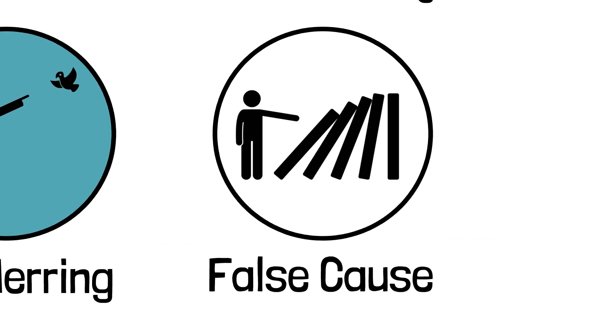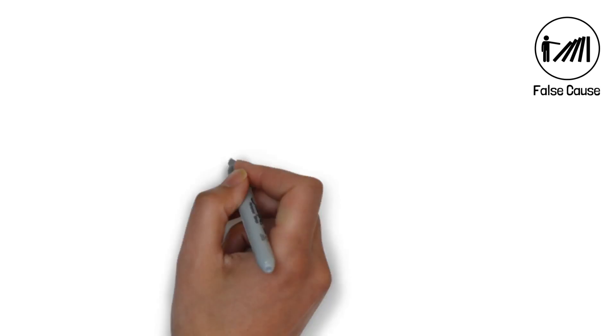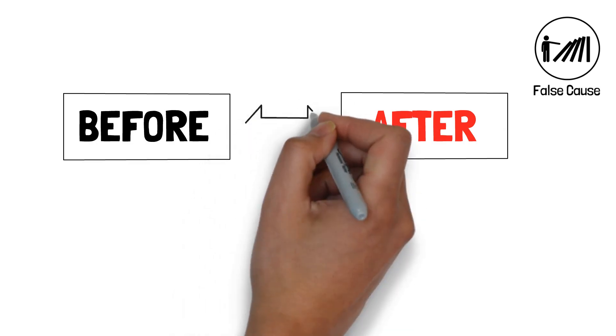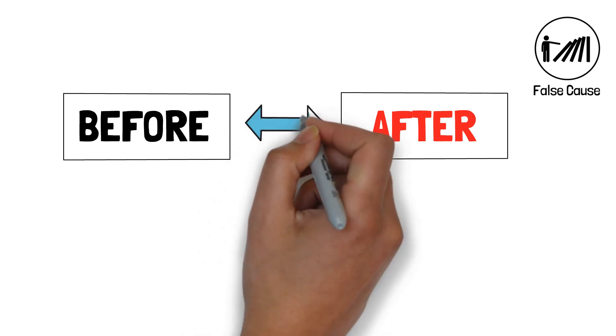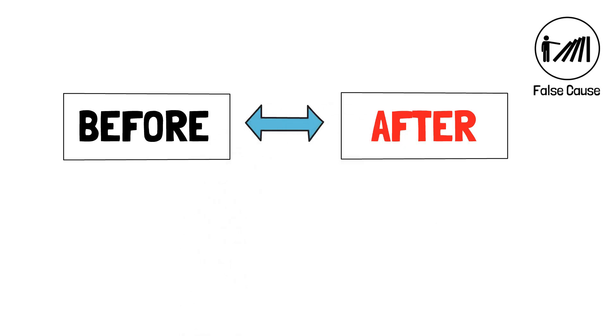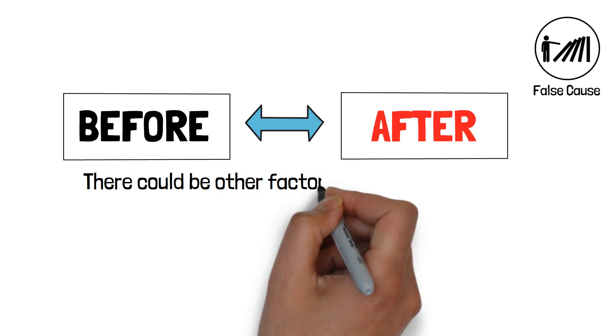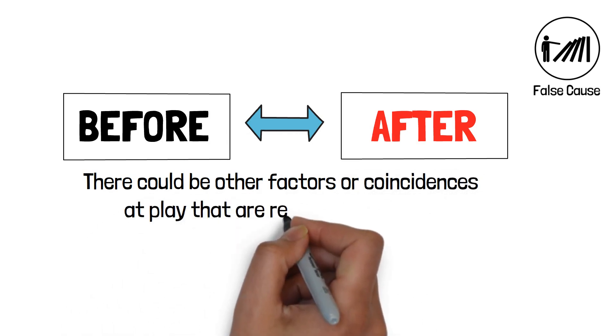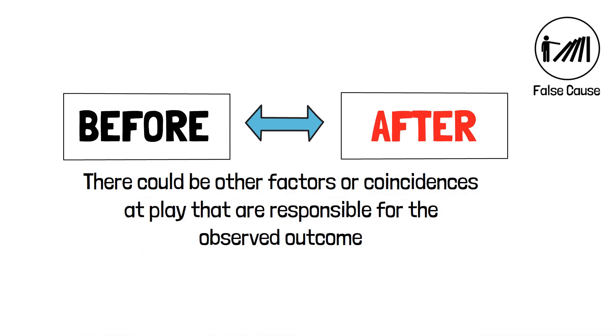10. False Cause. This fallacy assumes that because one event happened before another, it must have caused it. It wrongly assumes a cause-and-effect relationship without sufficient evidence or logical reasoning. Correlation does not imply causation, and there could be other factors or coincidences at play that are responsible for the observed outcome.